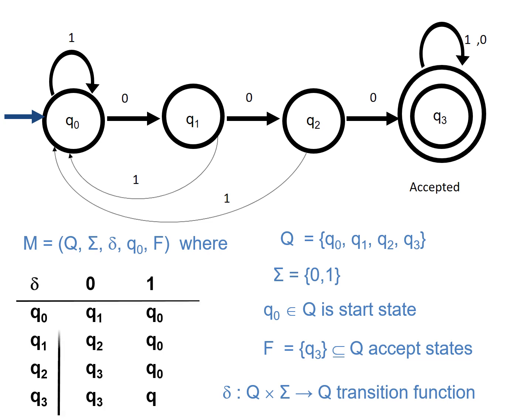The transition function is represented in a transition table. As noted, the final state is represented by a star — so q3 is marked with a star. The initial state is marked with an arrow. This is one complete example of constructing a DFA for strings containing at least three consecutive zeros.